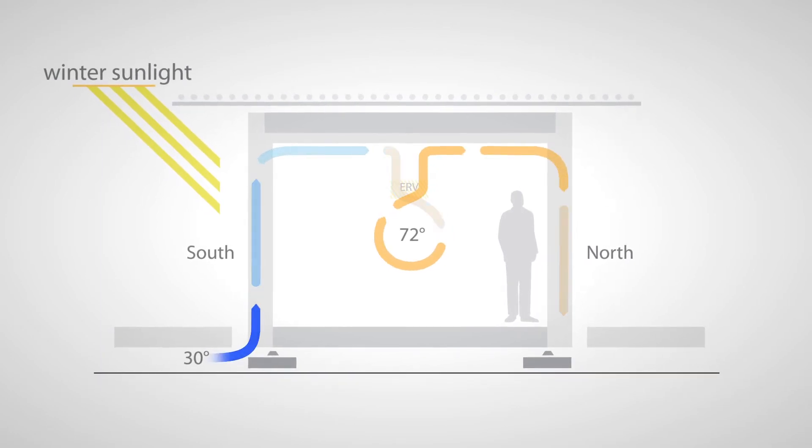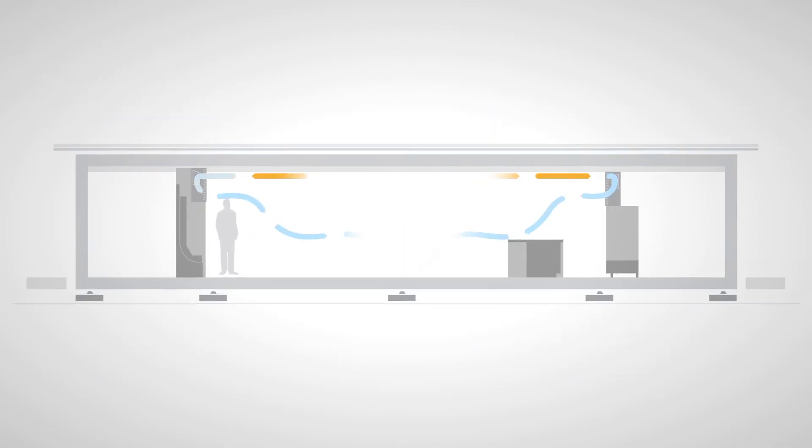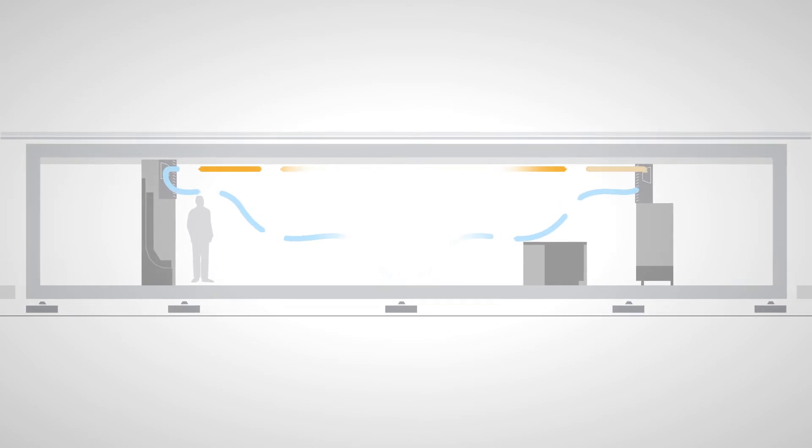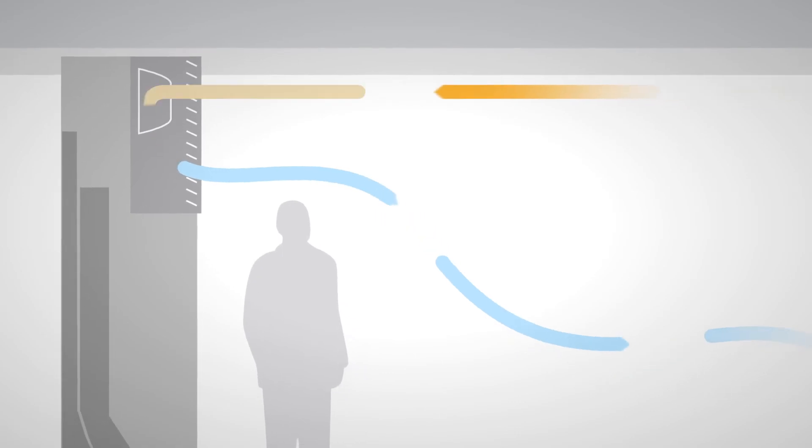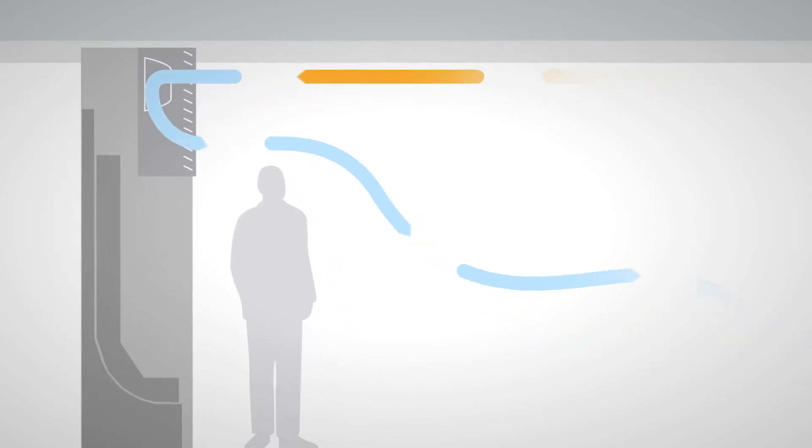The efficient SEER 22 ductless mini-split heat pumps filter the air while controlling the temperature and humidity for optimal thermal comfort.